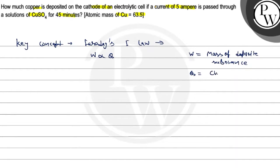And this Q value is equal to I into T. I here is current, pass current and T is time.